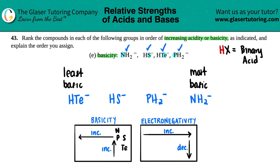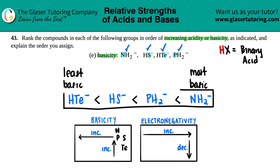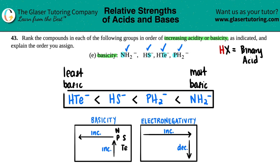Since we have our ranking, we just put our greater than or less than signs: HTe⁻ is less basic than HS⁻, which is less basic than PH2⁻, which is less basic than NH2⁻. So we have our answer.